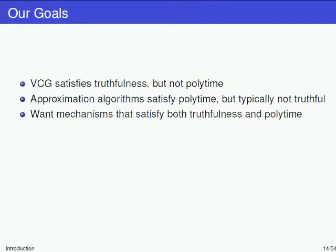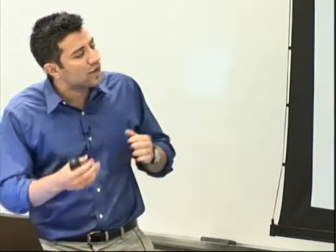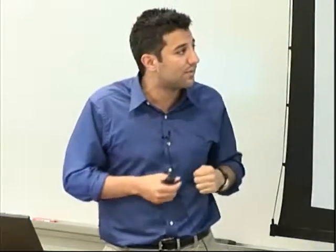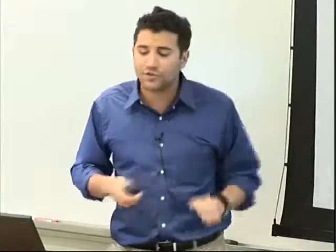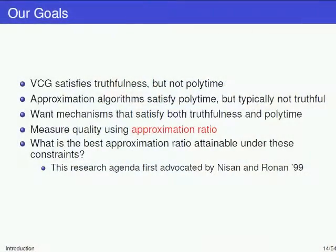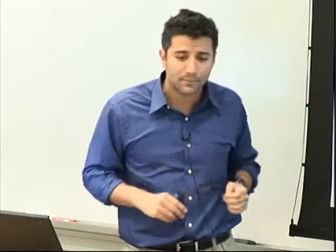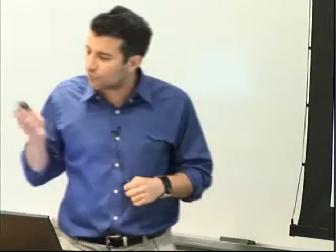Computer scientists have an answer: approximation algorithms that compute near-optimal solutions, with quality measured by the approximation ratio in the worst case — the percentage of optimal welfare on the worst-case input. For combinatorial auctions, the best approximation algorithm achieves 1 minus 1/e. We want a mechanism that's both truthful and runs in polynomial time with a good approximation ratio. This research agenda was first suggested by Nisan and Ronen, and it's grown a lot since.